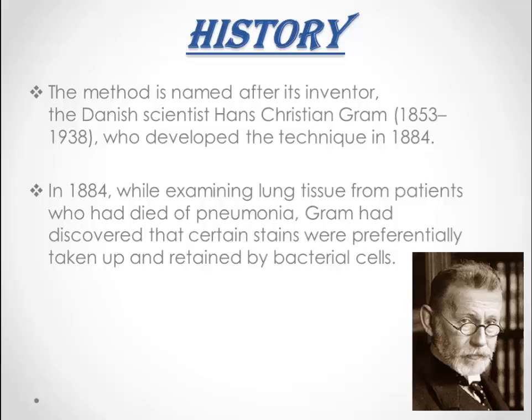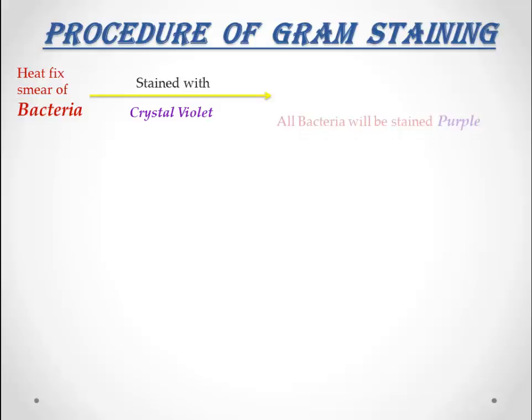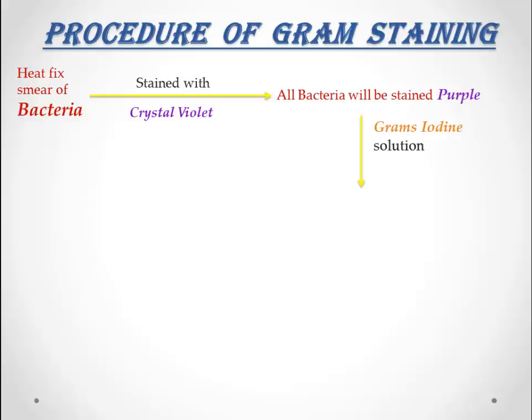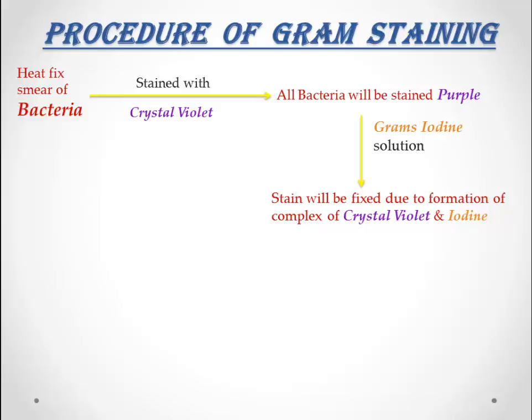Let's understand the procedure of gram staining. First, prepare a heat-fixed smear of a bacterial culture and stain it with crystal violet stain, due to which all the bacteria will be stained purple in color. Then apply gram's iodine solution, which acts as a mordant and fixes the crystal violet through the formation of a crystal violet iodine complex, also known as CVI complex.